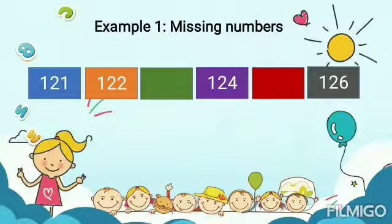Here, you find the 3 digit numbers written and you see the 2 numbers are missing. So, let us write the missing numbers. First, we will count 121, 122, then what will come? 123, then 124 and the missing number is 125.